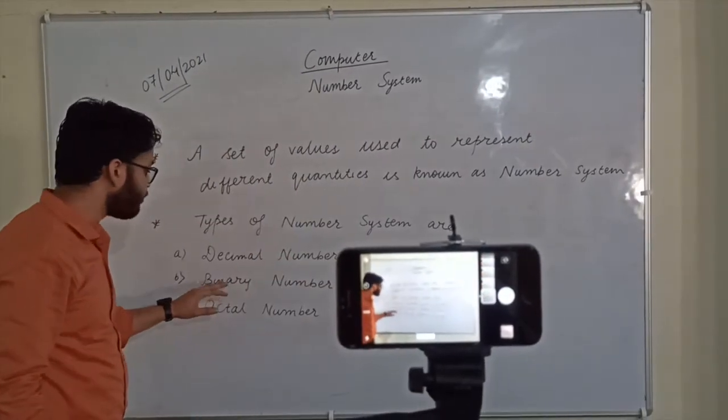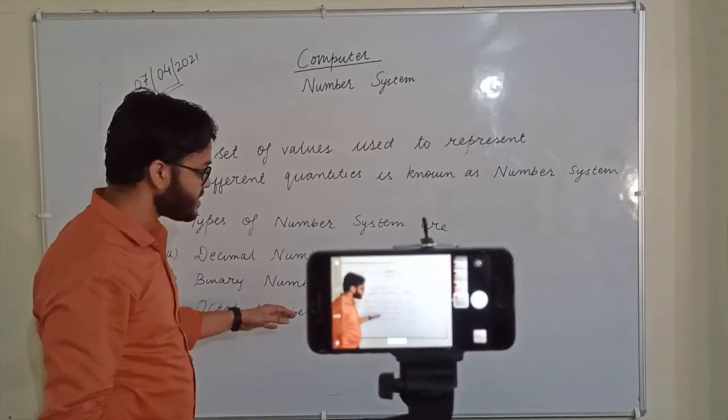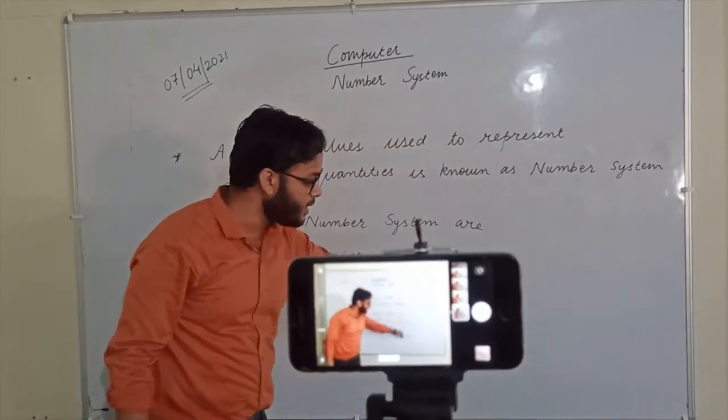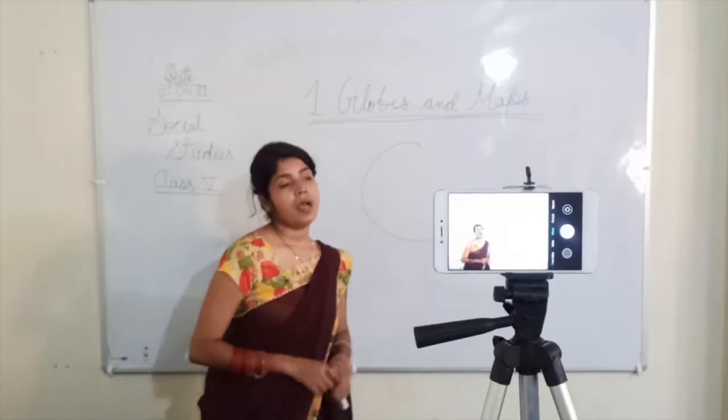The second type of number system is binary number system. It uses the digits 0 and 1, and the third type of number system.